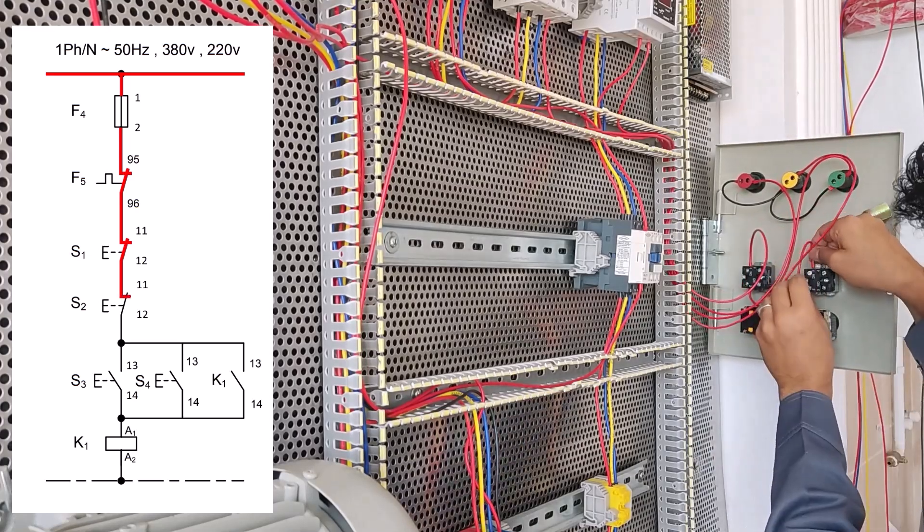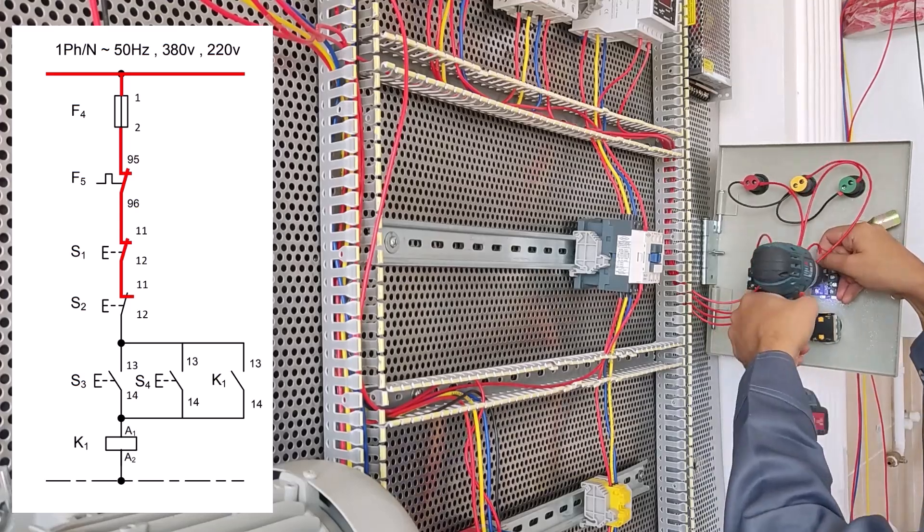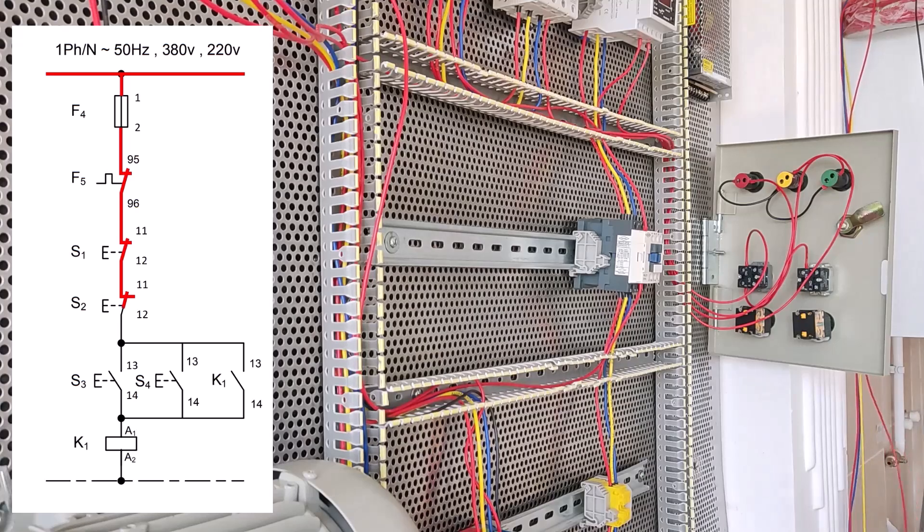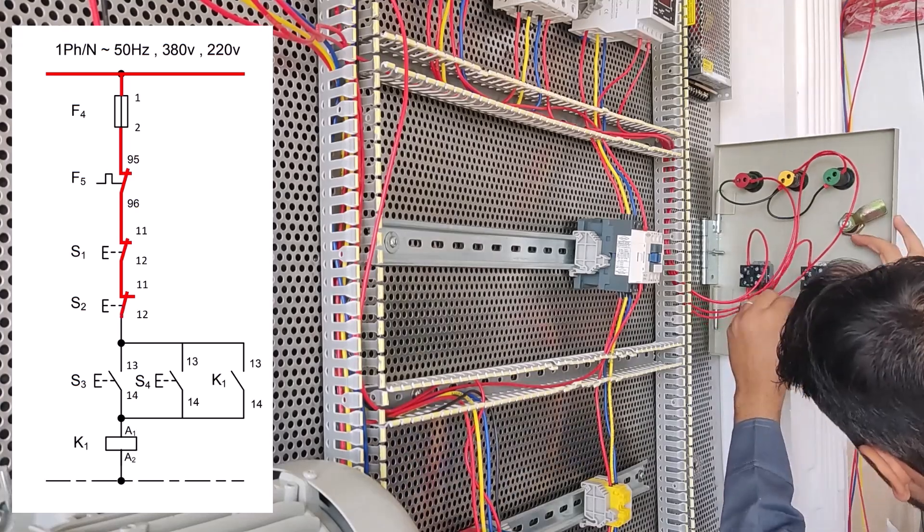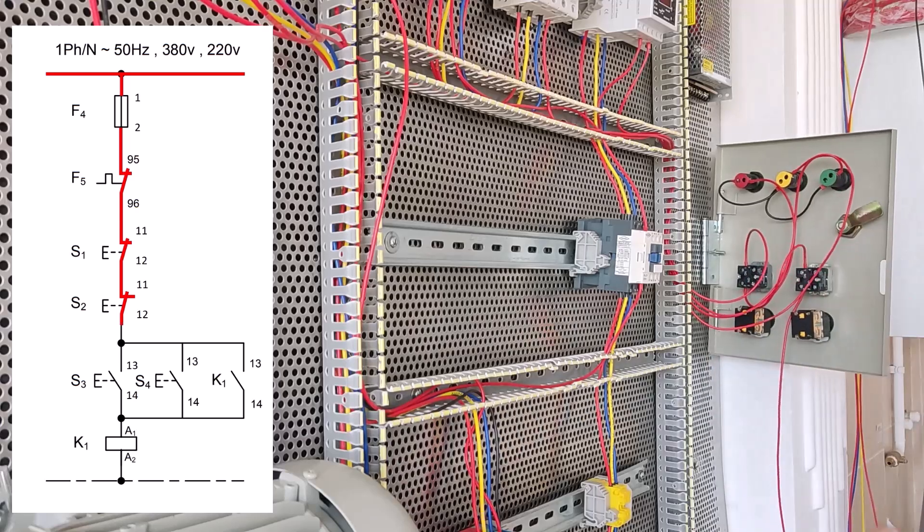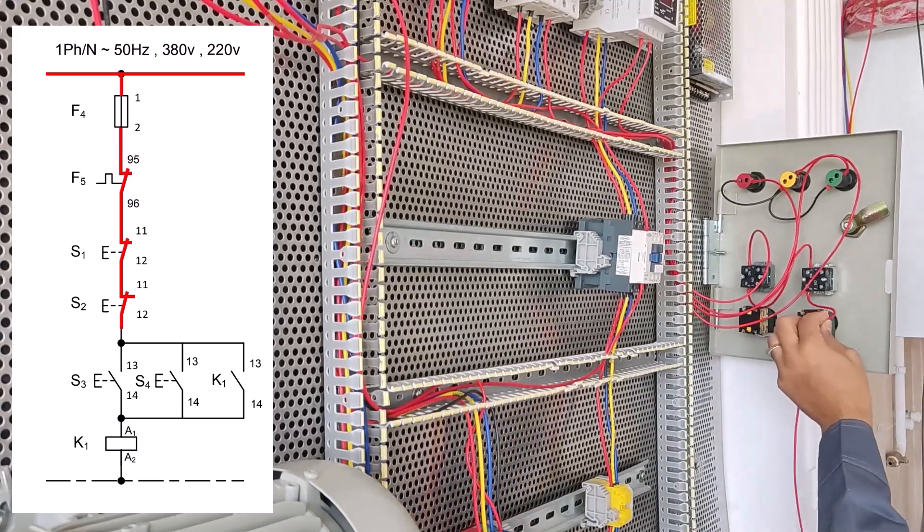If we want to control a motor from the beginning and the end of the production line, we use this control circuit.